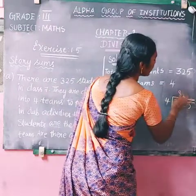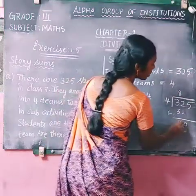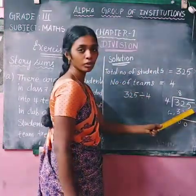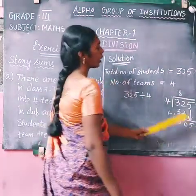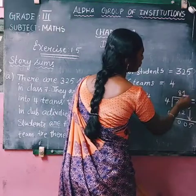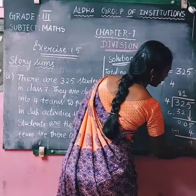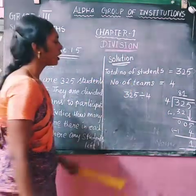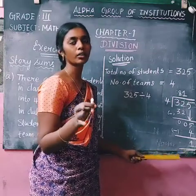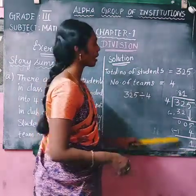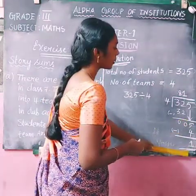Now we perform the division. 8 fours are 32, so subtracting: 32 minus 32 gives 0. Pull down the remaining digit 5. How many times does 4 go into 5? 1 four is 4. So 5 minus 4 gives remainder 1. If we put 0 before a number it has no value, so the remainder is 1.